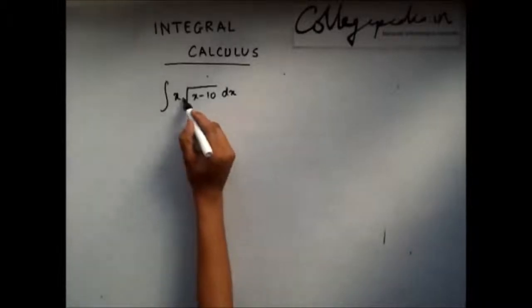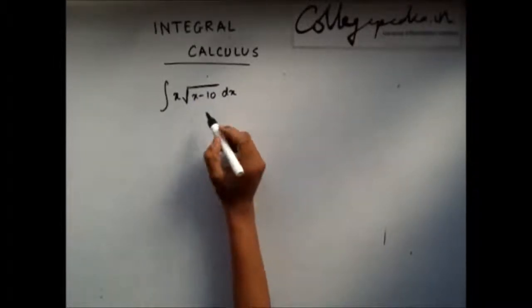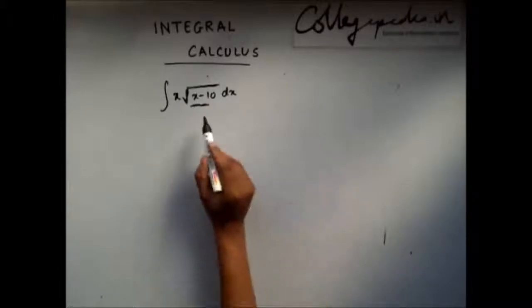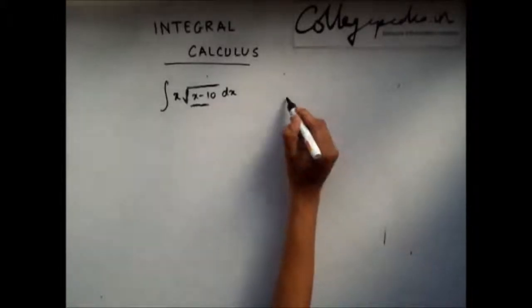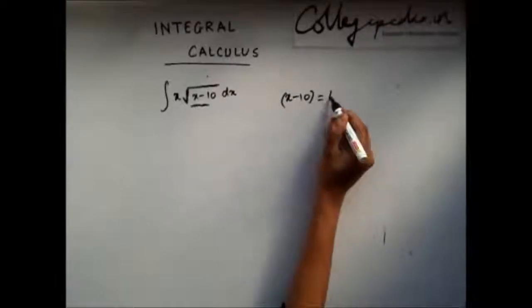In questions involving square root or cube root, what you need to do is you should try to get rid of this root sign. To get rid of this root sign, what I will do is I will write x minus 10 as t square.